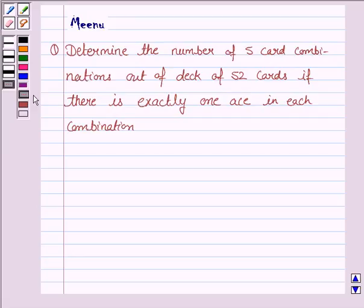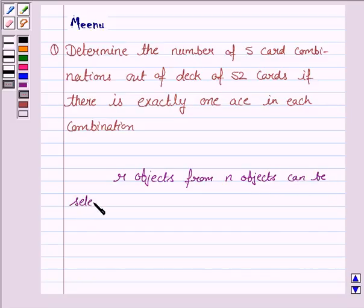To solve this question, we should know the theory of combination which says R objects from N objects can be selected in NCR ways.